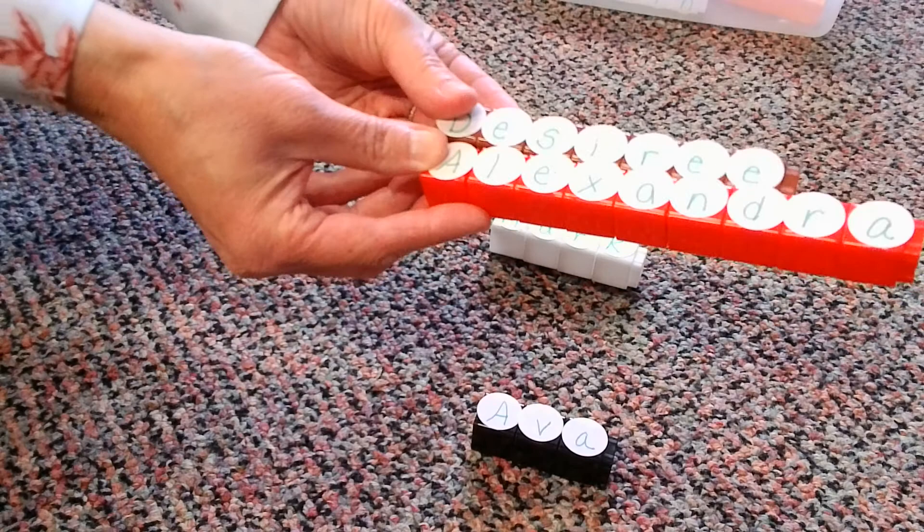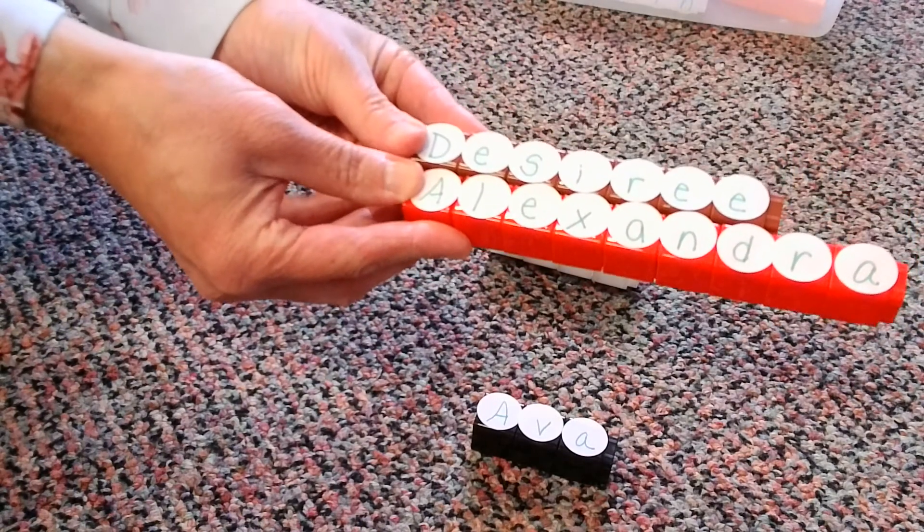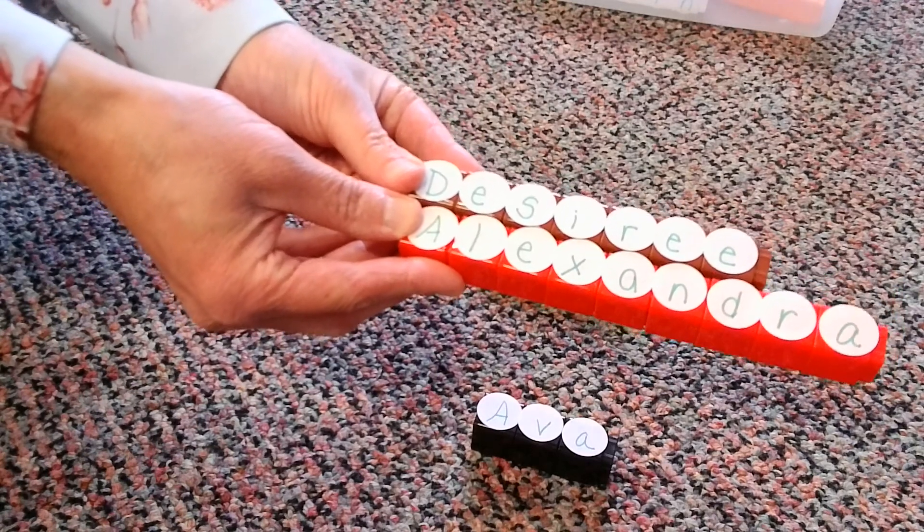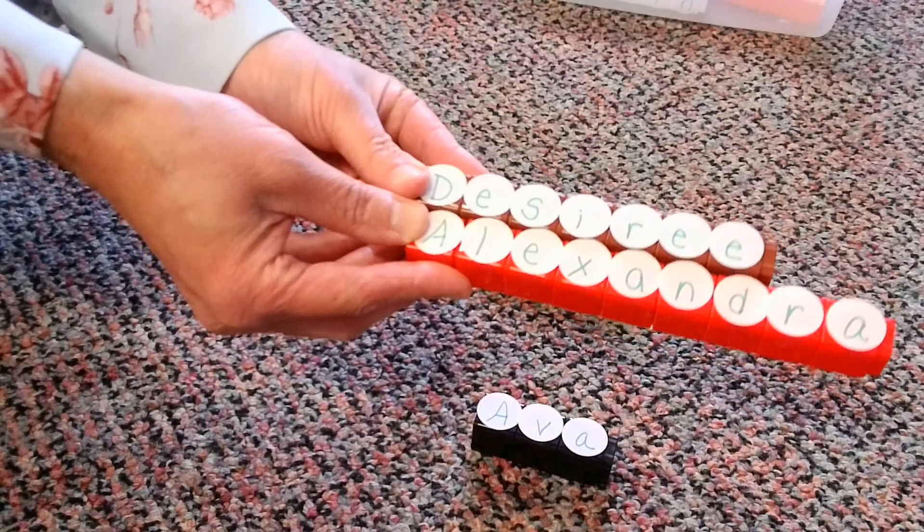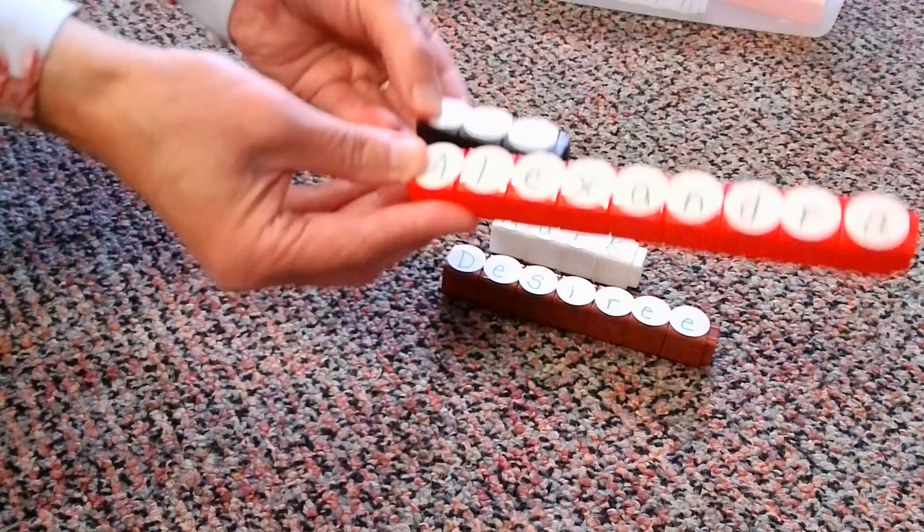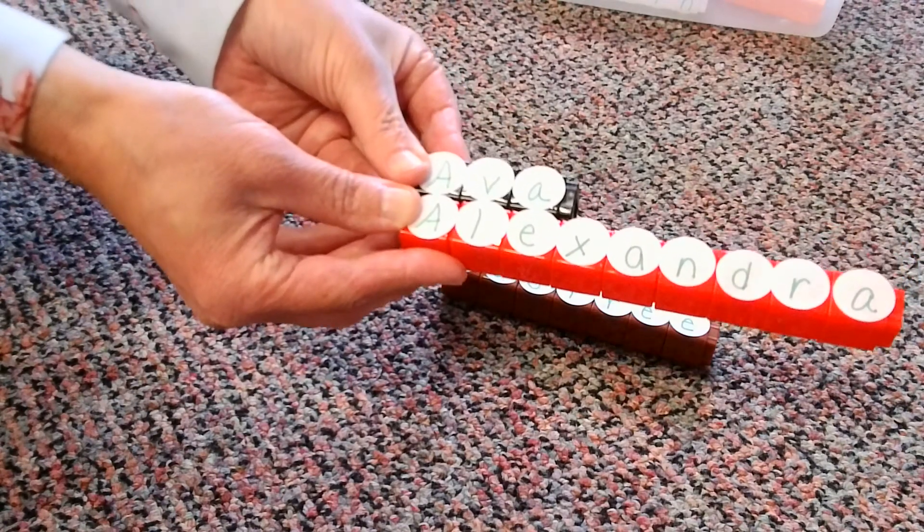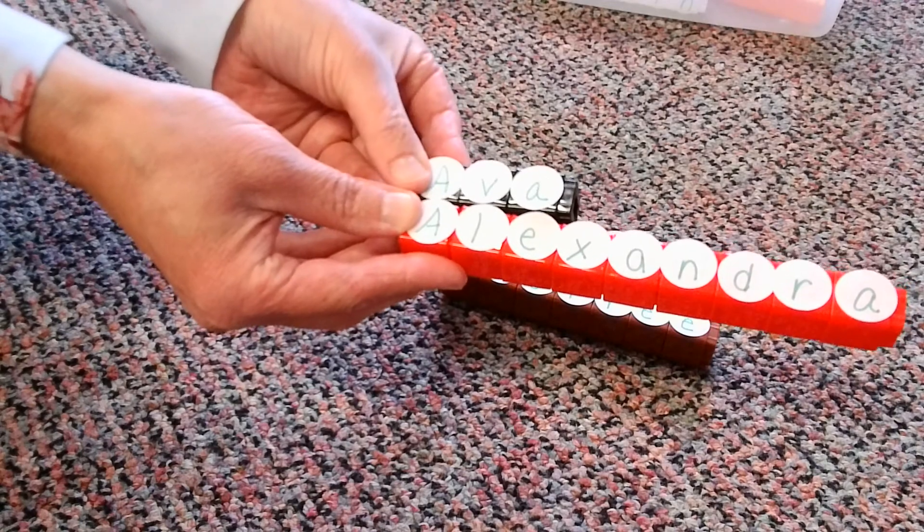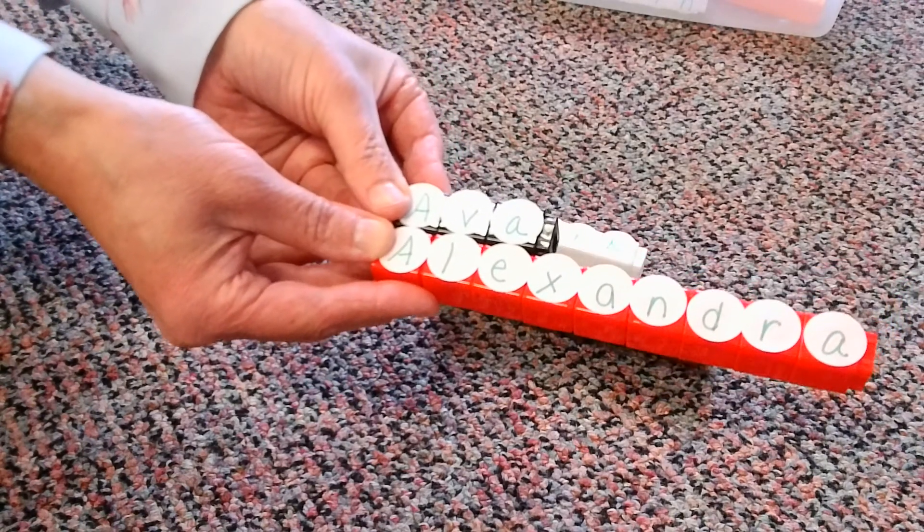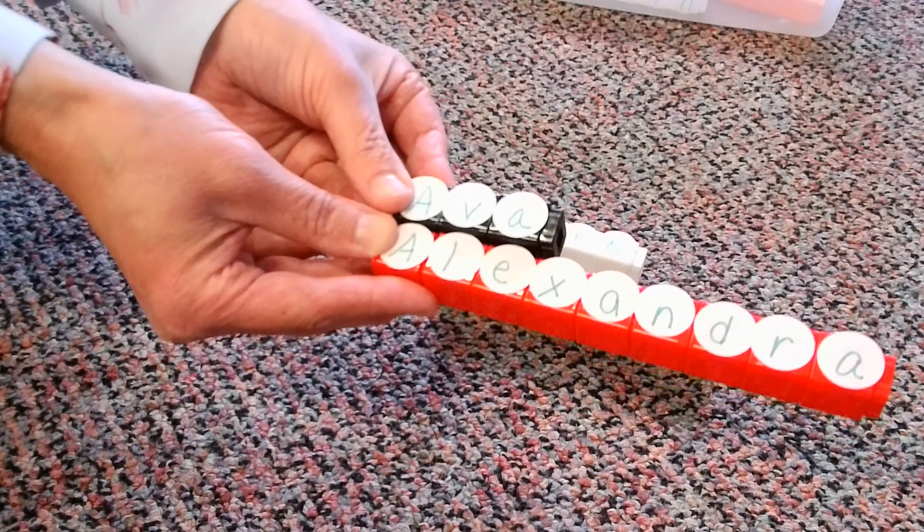Let's compare Alexandra to Desiree. Looking at Alexandra again, Desiree seems to have less cubes than Alexandra. Alexandra's longer again. Ava to Alexandra. I think Ava was our shortest name with only three. Alexandra was our longest name with nine. So definitely Alexandra's the winner here again.